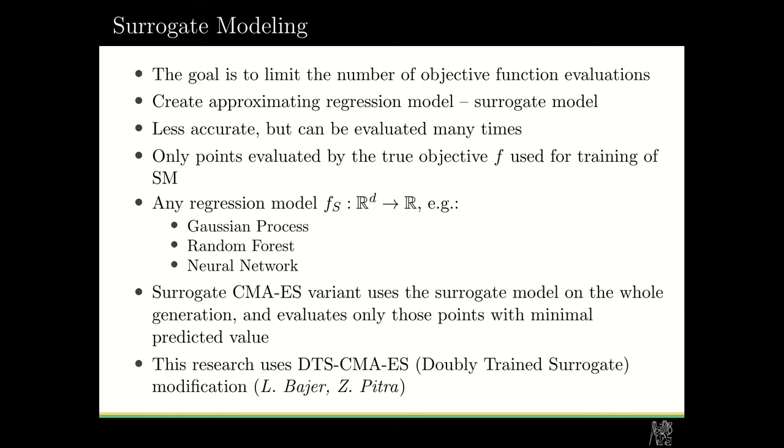To train the surrogate model, we use only the points evaluated by the true objective function. The surrogate model can be in fact any regression model, for example Gaussian process, random forest, or neural network. The surrogate CMA-ES variant uses the surrogate model on the whole generation and then it evaluates only those points with minimal predictive value. In this research, we used a version of CMA-ES called DTS, doubly trained surrogate, and it was proposed by Lukáš Bayer and Zbigněk Petra.